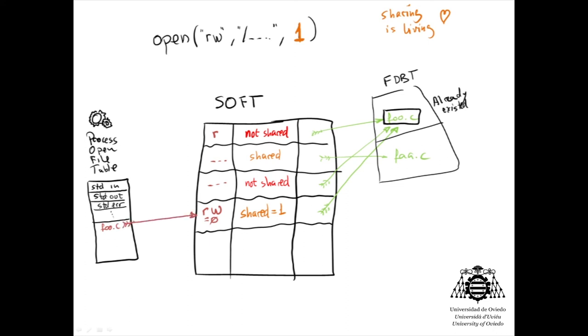pointing to the entry already created in the system open file table. Finally, the operating system can return the pointer in the process open file table to the process calling the function.